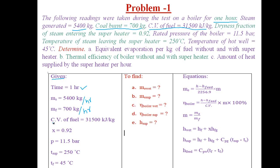Then the dryness fraction of steam coming out of the boiler — it enters into the superheater with a dryness fraction of 0.92, meaning it is wet steam before entering into the superheater. So dryness fraction x = 0.92. Then the rated pressure of boiler is 11.5 bar. Boiler working pressure is 11.5 bar.